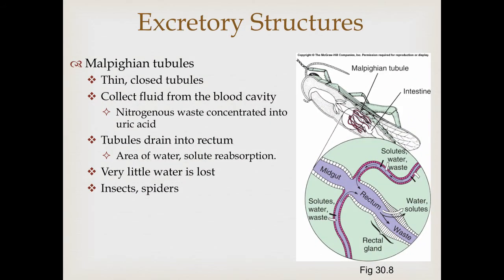Insects and some spiders have a system called the Malpighian tubule system — a series of very thin closed tubes connecting directly to the intestines. These tubules collect fluid from the blood cavity, nitrogenous wastes are concentrated into uric acid crystals and dumped into the rectum, where water needed by the body is retained and solutes like salts and sugars are resorbed. This is a very efficient system requiring very little water, which is one reason why insects and spiders are so amazingly common in deserts.